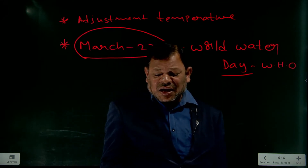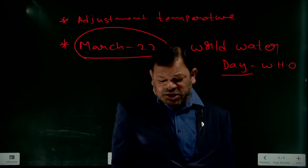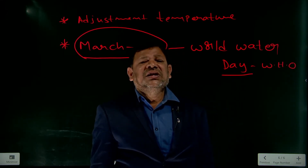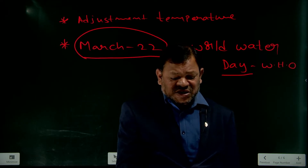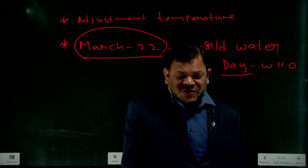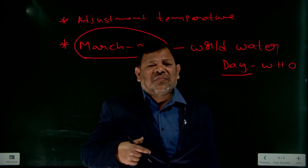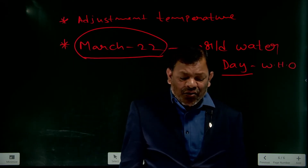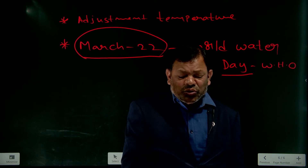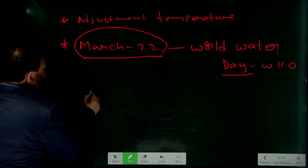Water exists in three states: ice is the solid state, drinking water is the liquid state, and water vapor is the gaseous state. Occurrence of water — in plants and animals, 75% of the body of the organism is made up of water. There are two natural sources of water: underground water and surface water.